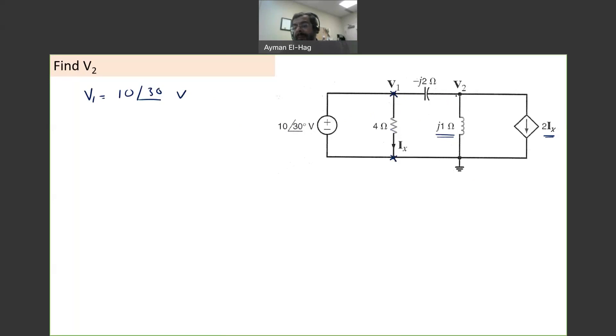Now, we can apply KCL at V2. We have 1, 2, and 3 branches. So we can apply KCL here, assuming the currents are leaving as we usually do. So we will have V2, the current to the left, minus V1, which is 10∠30°, divided by the impedance or reactance between them, which is -j2, plus the current that goes through the inductor, V2 divided by j1. And the current that leaves the third branch is a current source, which is equal to plus 2Ix, equal to 0.